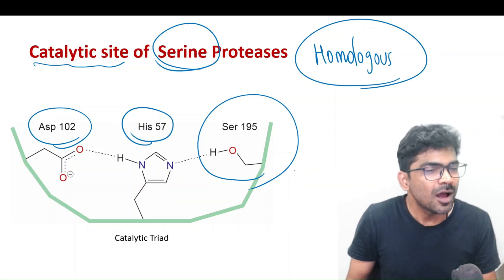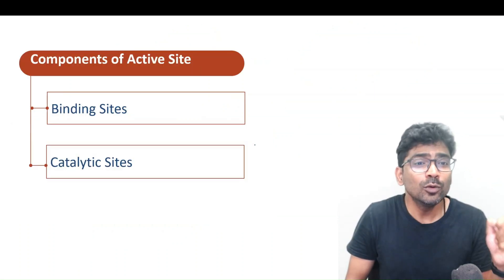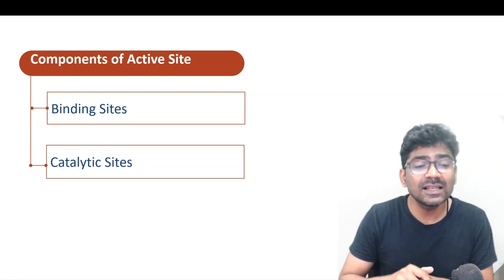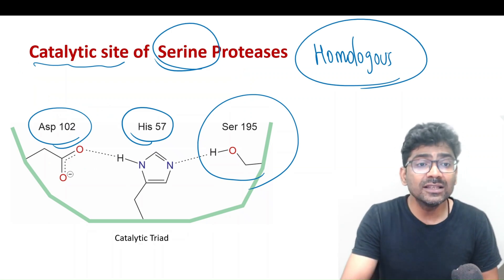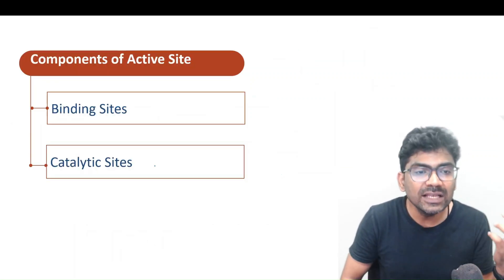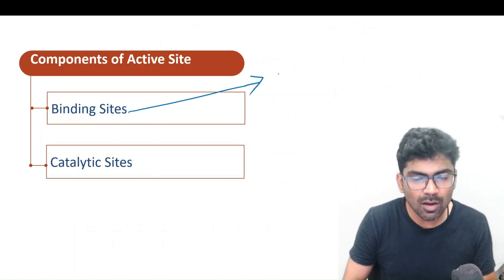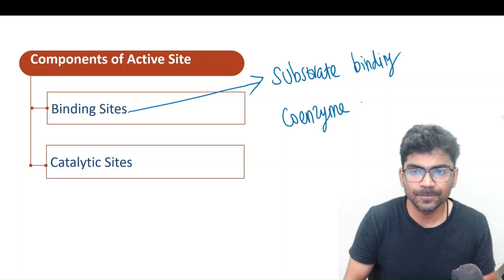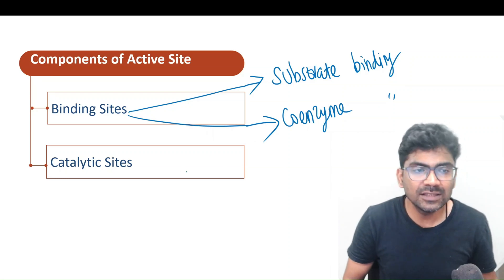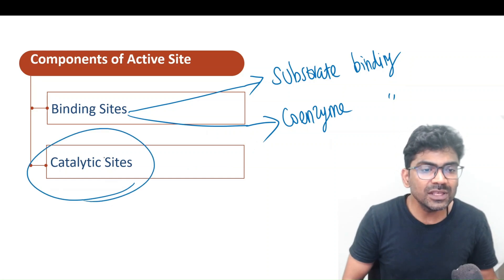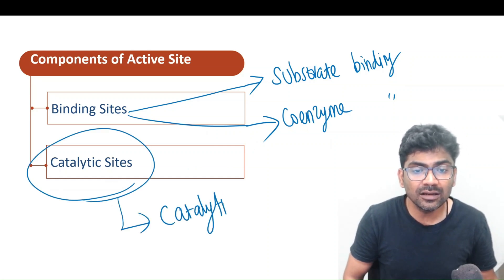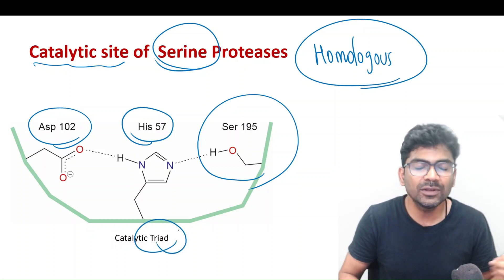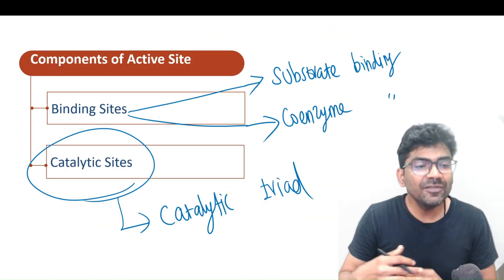Now, how to answer those questions? For that, you have to remember this fact: the active site is made up of a binding site as well as a catalytic site. The binding site is the site of substrate binding and coenzyme binding in certain enzymes. So, active site equals binding site plus catalytic site. There is a catalytic triad present in the active site — three amino acids, which is why it is called a catalytic triad. We haven't yet discussed the binding site, and that discussion is going to help in solving those MCQs.